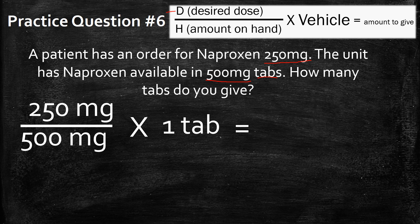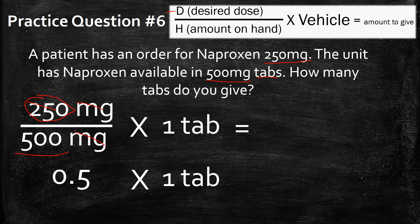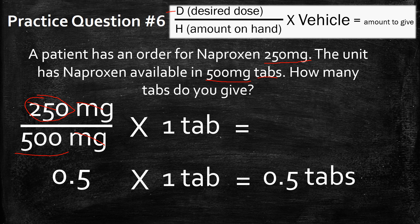Once you've got this all filled out, all you have to do is solve the formula. 250 milligrams divided by 500 gives you 0.5, and multiplying that by one tab means you're going to be giving this individual half a tab.